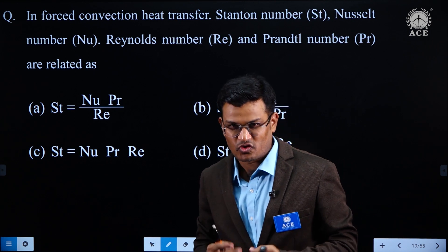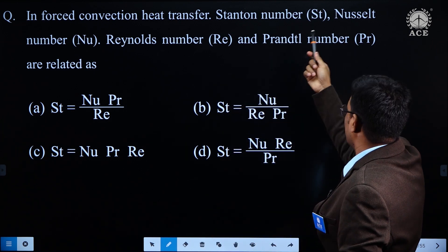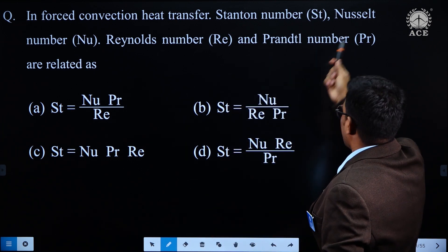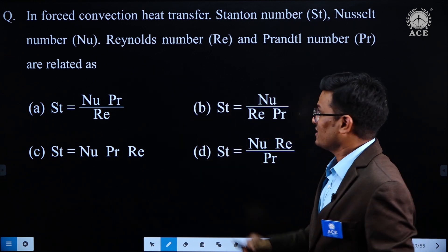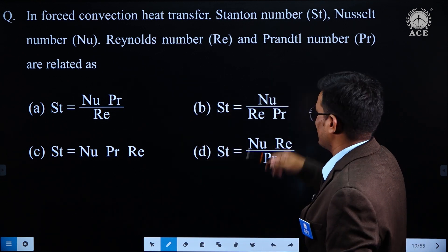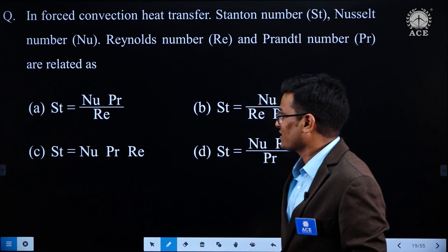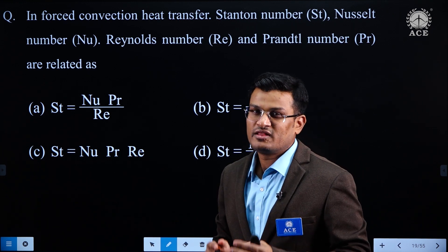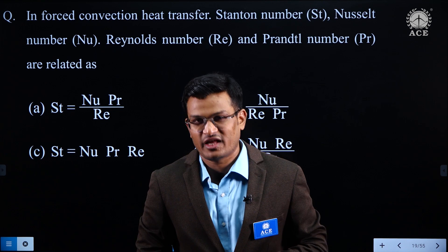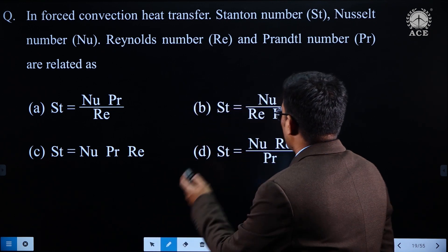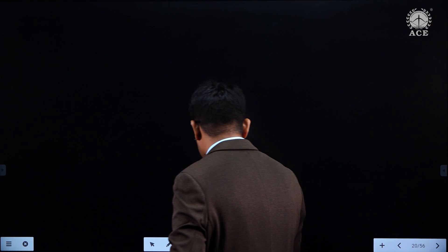This question belongs to forced convection. Stanton number ST, Nusselt number Nu, Reynolds number Re, Prandtl number Pr — how are these related? There are four options given. First of all, try to understand this question belongs to forced convection external flow. Let us try to find out the solution.